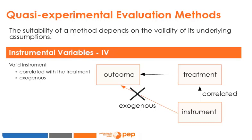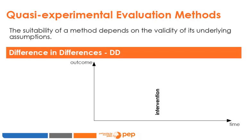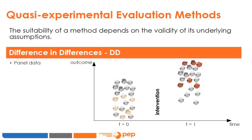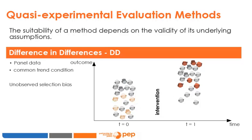Exogeneity is the strongest condition because it implies that the instrument does not affect the outcome except by influencing the probability of receiving treatment. The Difference-in-Differences method, also called DD, requires panel data — we need data from before and after the intervention. The underlying assumption in DiD is that the treatment and comparison groups both experience similar events or influences over time, referred to as the Common Trend Condition. This assumption is not testable because we cannot observe what would have been the trend of the treatment group had they not benefited from the intervention. The DiD method is useful when the selection into the treatment group is based on unobservable characteristics, i.e., when there is unobserved selection bias.